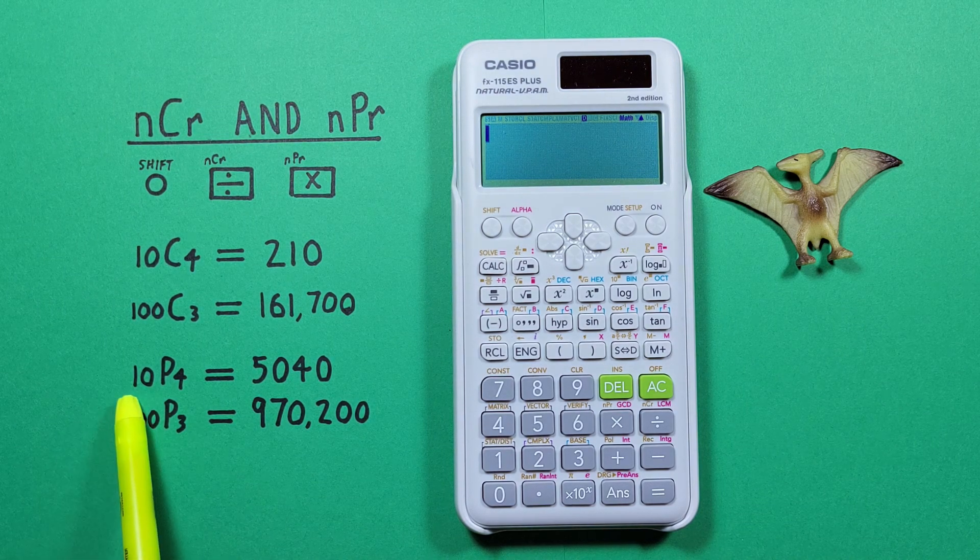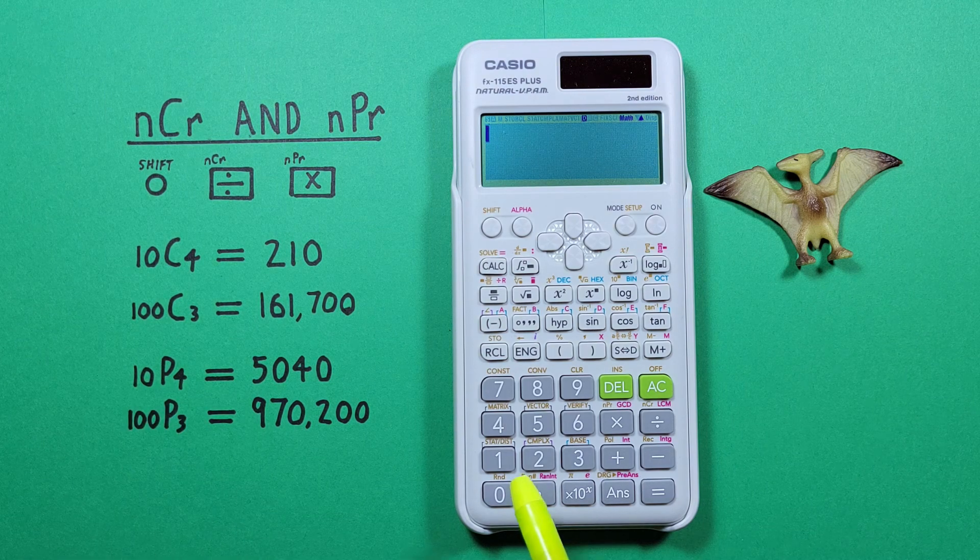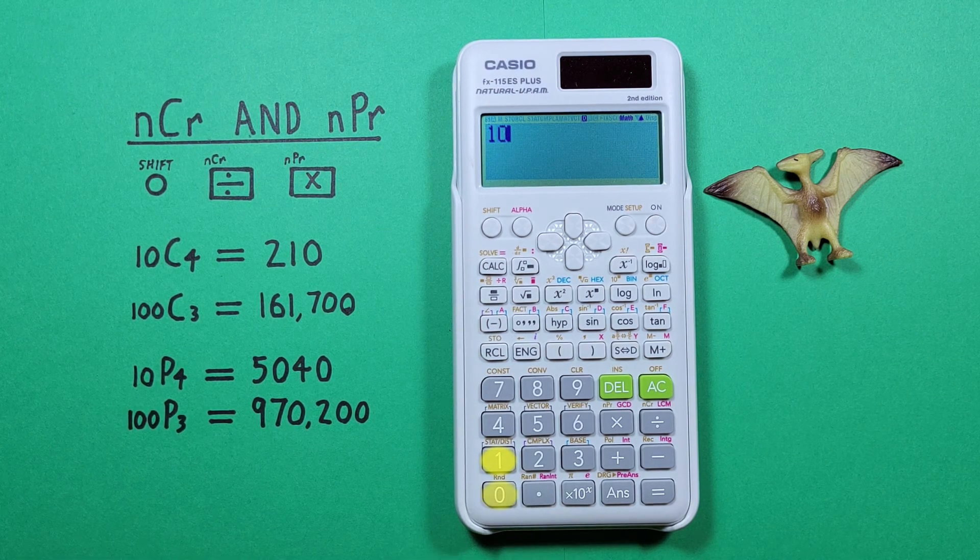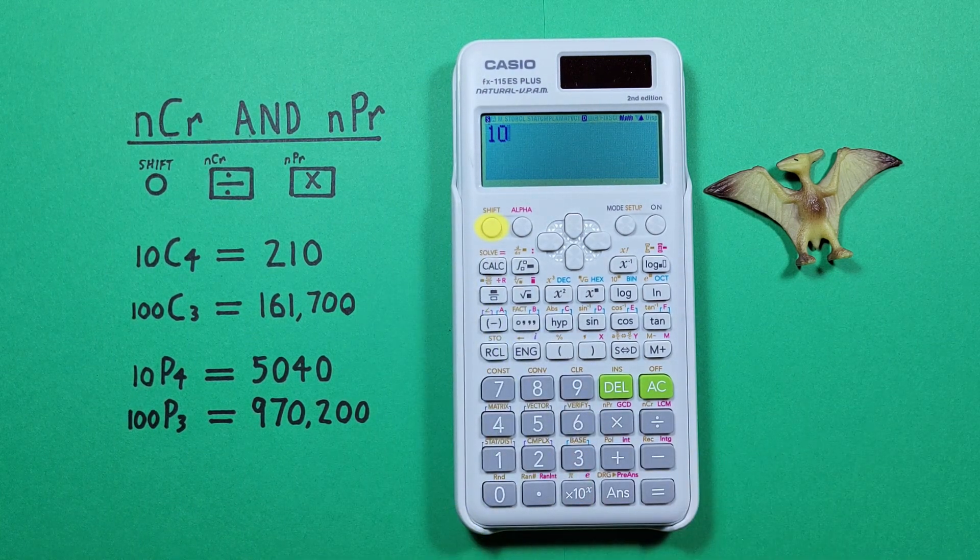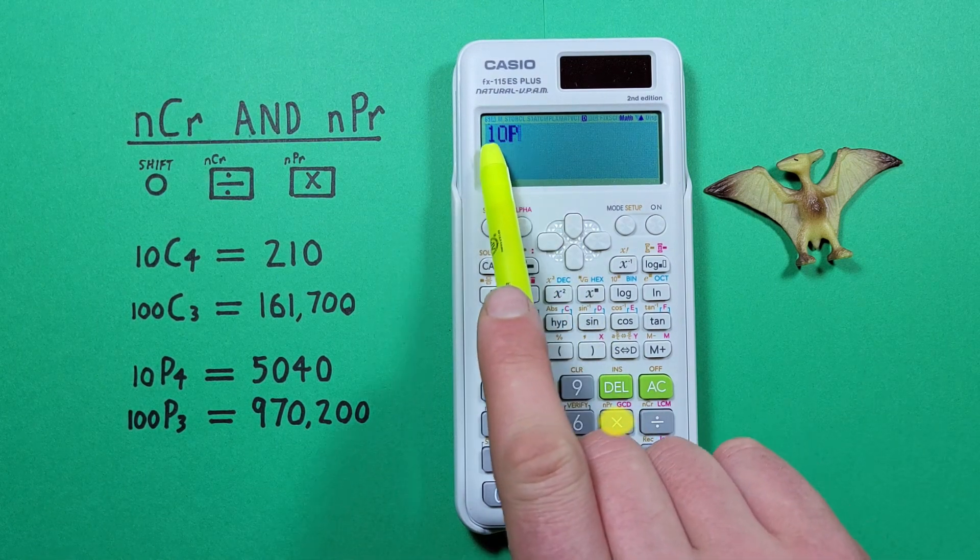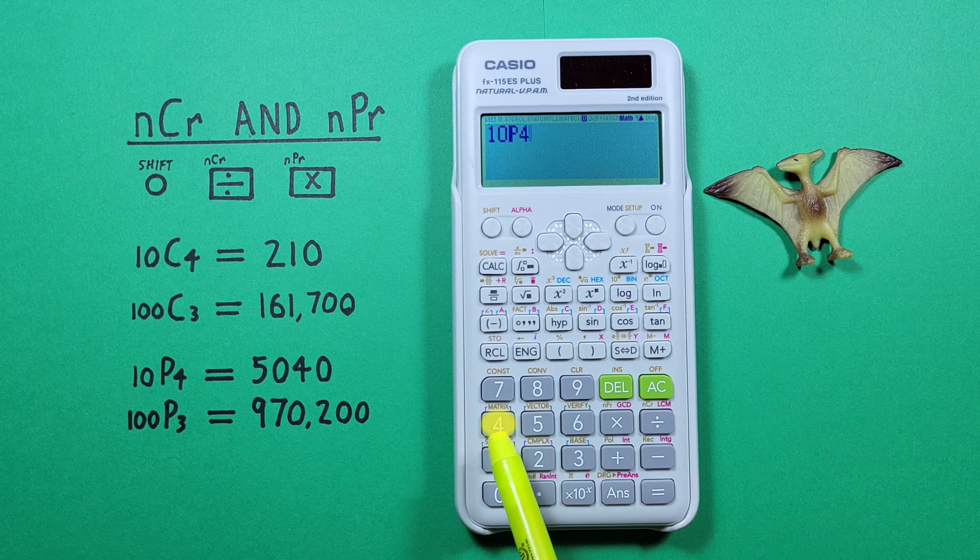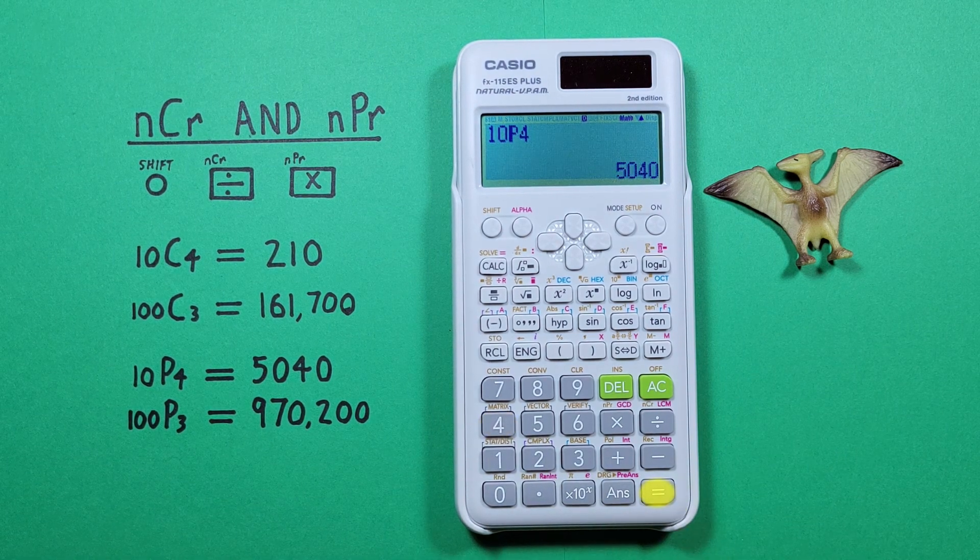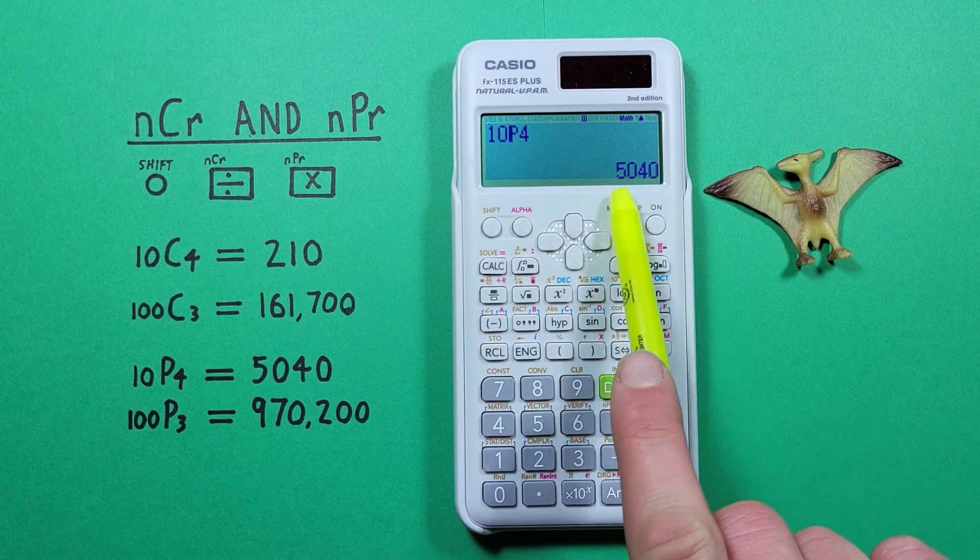So if we have 10 items and want to choose 4 permutations, we start by entering the 10 and then shift and then the multiplication key and we see the P there for permutations and then 4 and press equals and we get a result of 5040 possible permutations.